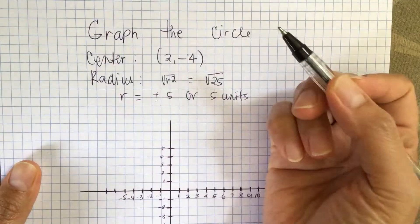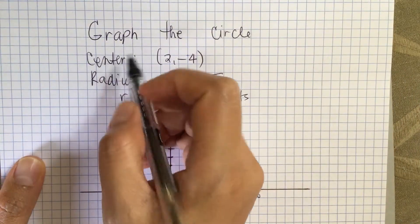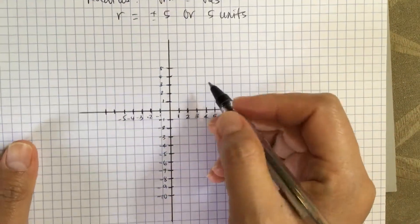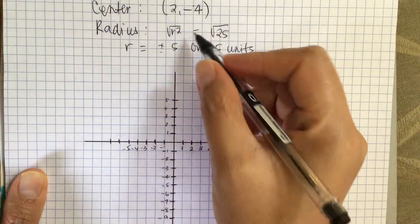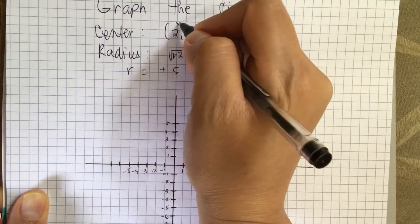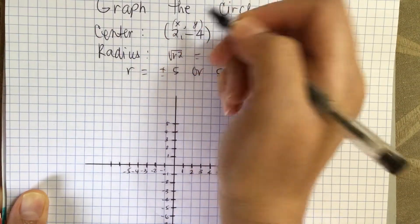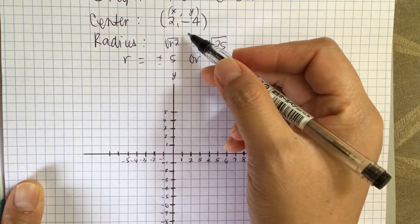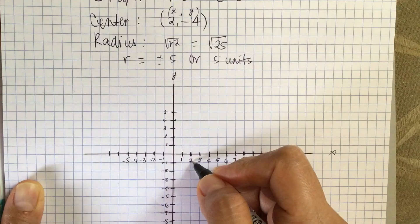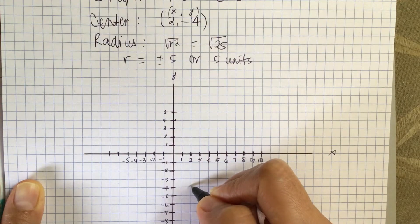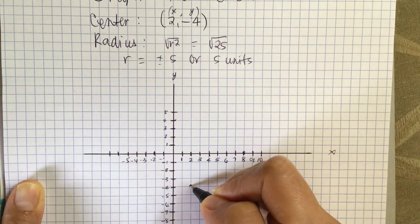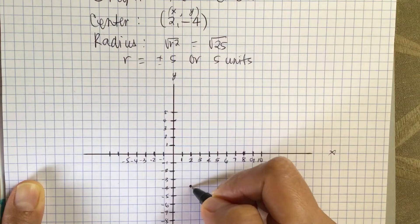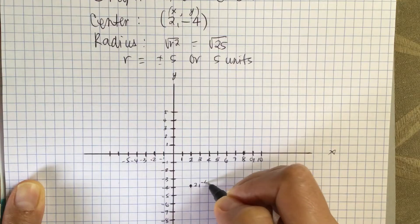So to graph a circle, let's find the center, which is (2, negative 4). So x is 2 and y is negative 4. So here's 2, and then negative 4 — over here. So 2 comma negative 4, this is the center.